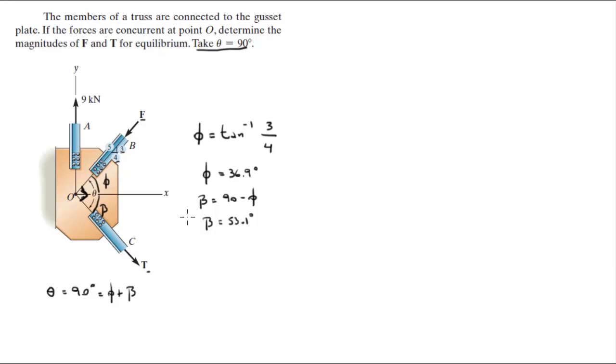So now that I have the angles, the problem becomes much easier. You know that the sum of the forces in dx is 0. Let me actually write the angles on my diagram. 36.9 degrees and beta is equal to 53.1 degrees. Okay, so the sum of the forces in dx is 0.